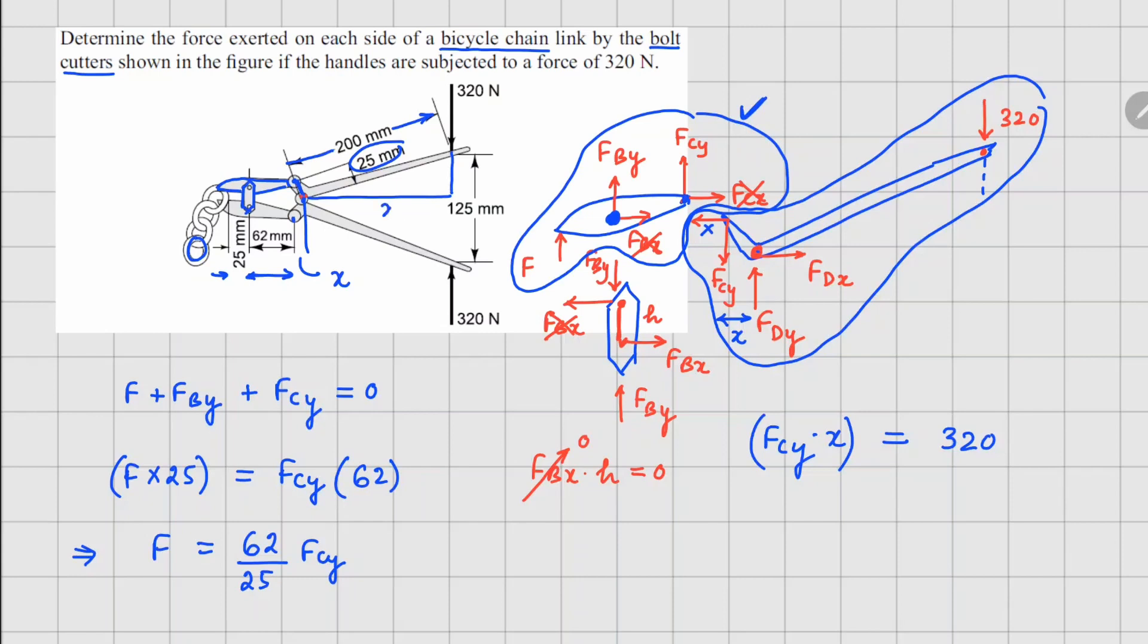To calculate x1 we can look at this triangle right here. This is 125, so this becomes 62.5, and the slanted length is 200 here. So using Pythagorean theorem we can find out x1 to be square root of 200 square minus 62.5 square.